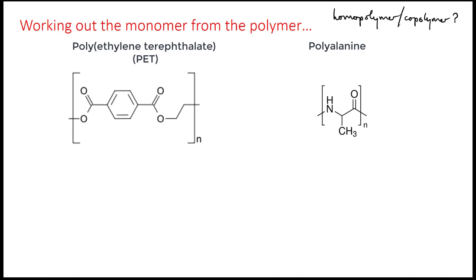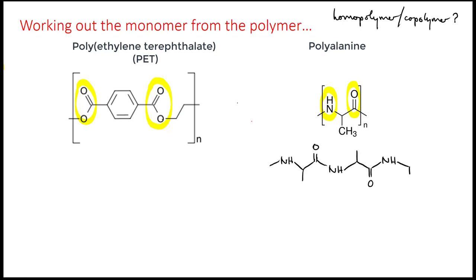You can see that PET on the left is probably a copolymer — it has two ester linkages, while the polyalanine has only one amide. In this way of drawing the repeating unit of polyalanine, the amide appears split up: the nitrogen is on the left of the unit and the carbonyl is on the right. Don't be fooled by this. If you're unsure, draw a couple more repeating units and divide them up in a more convenient way so you can see what's going on.